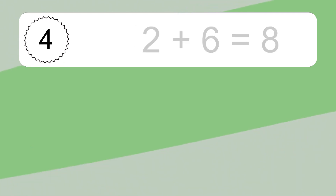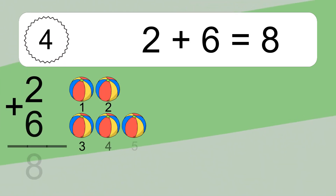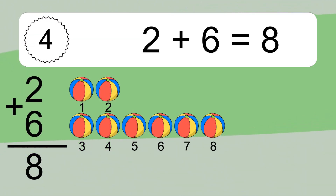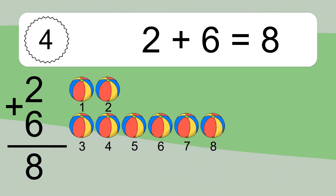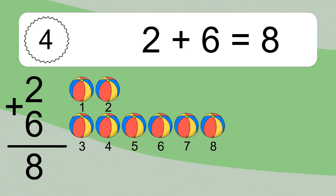2 plus 6 equals what? 2 plus 6 equals 8. Let's count it. 1, 2, 3, 4, 5, 6, 7, 8.